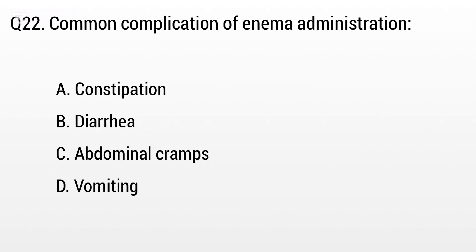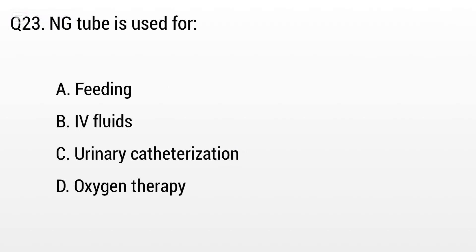Question 22: Common complication of enema administration? The right answer is option C: Abdominal cramp. Question 23: NG tube is used for — option A: Feeding, B: IV fluids, C: Urinary catheterization. The right answer is option A: Feeding.